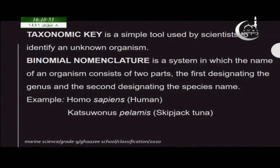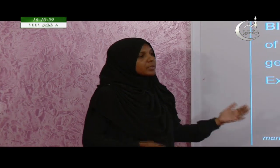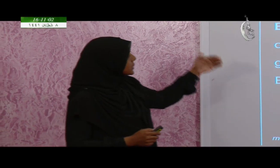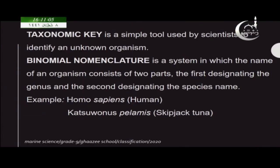Now we are going to look at how organisms are grouped, how scientists divide and identify organisms. Before we start, we will look at the taxonomic key — a simple tool used by scientists to identify unknown organisms.